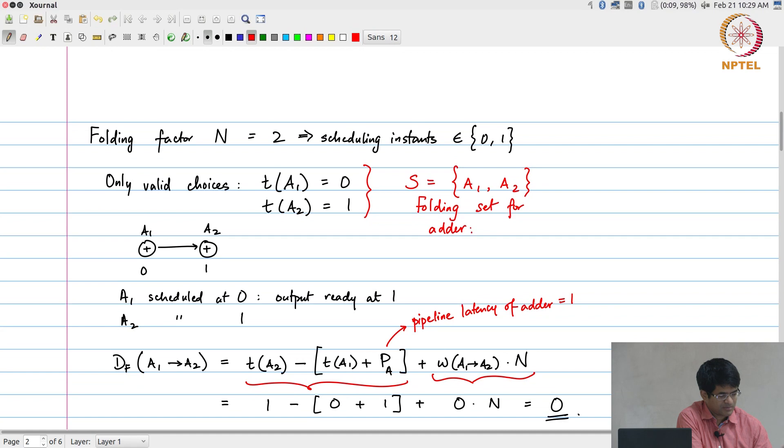This is the folding set for the adder. The meaning of this notation is basically that the adder has two phases in which it can operate, and because I have given this a1 comma a2, it means that a1 is going to execute in phase 0 and a2 is going to execute in phase 1. Even though I am using curly brackets it is not an unordered set. Actually the order is important over here: a1 followed by a2.